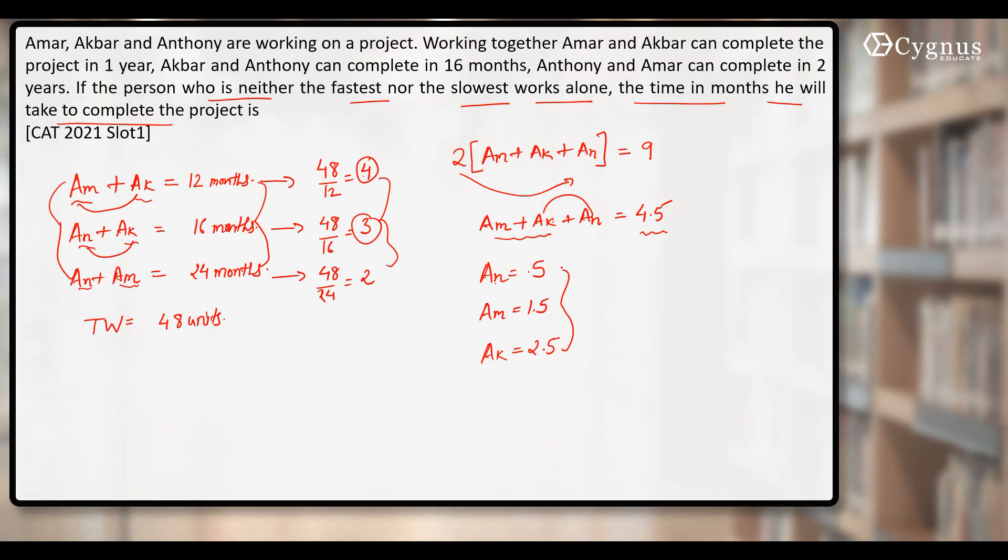Now who is the slowest one? Anthony is the slowest one. Who is the fastest one? Akbar is the fastest one. So this is the person who is neither slowest nor the fastest one.